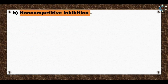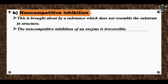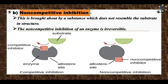Non-competitive inhibition is brought about by a substance that does not resemble the substrate in its structure. Non-competitive inhibition of an enzyme is irreversible. The non-competitive inhibitor binds to the enzyme at a site other than the substrate binding site, and no product is formed. For example, cyanide inhibits the mitochondrial enzyme cytochrome oxidase, which is essential for cellular respiration, killing the animal. In competitive inhibition, the inhibitor binds at the active site and competes with the substrate, while in non-competitive inhibition, it binds at a different site — this is the main difference between the two.